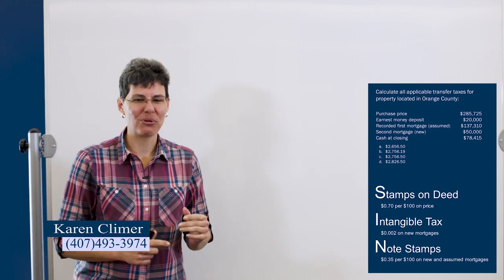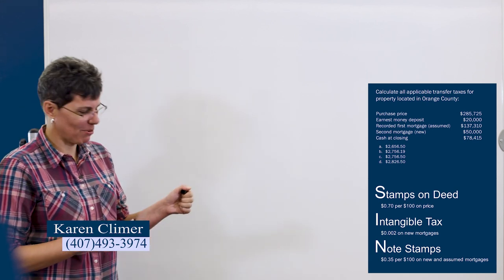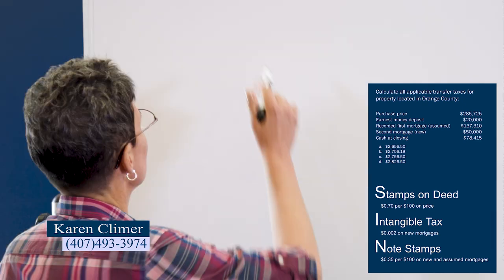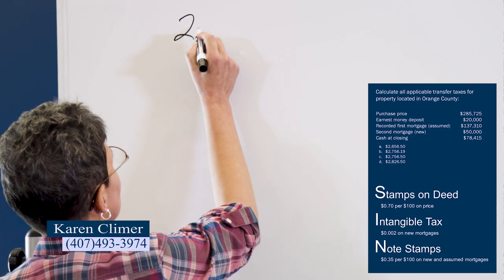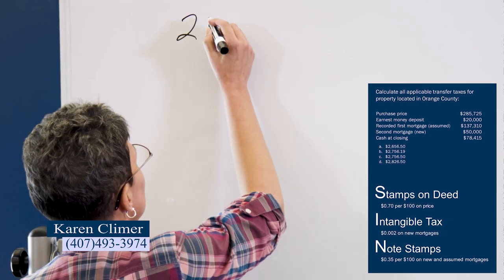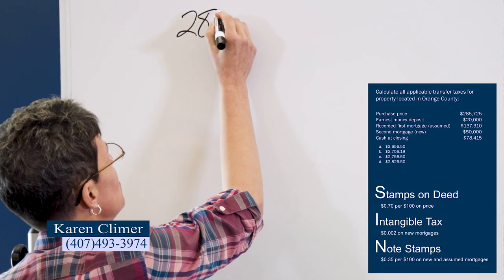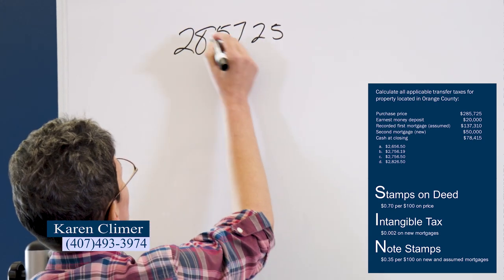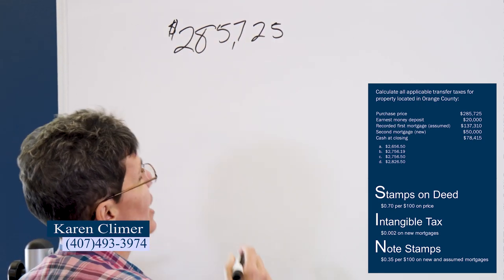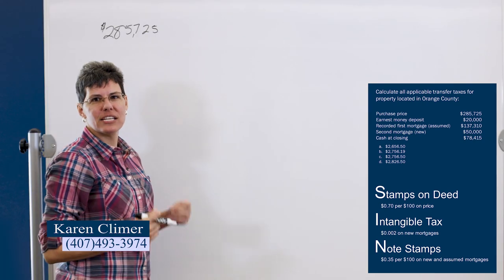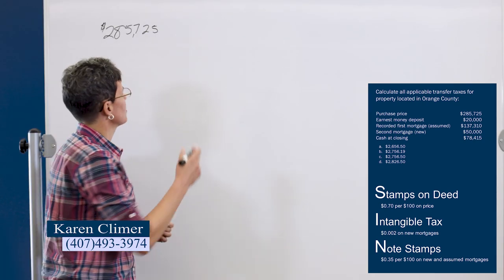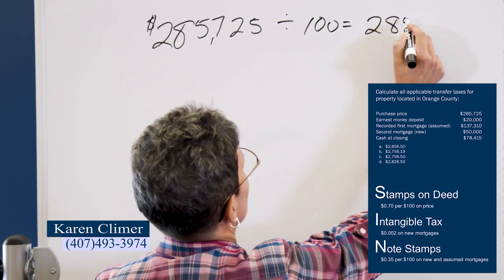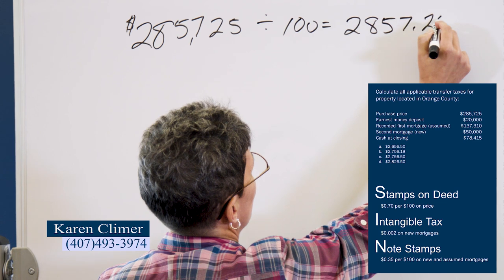So we're going to have several small problems for this one big problem. So we're going to start off with the purchase price, the stamps on the deed. So we've got $285,725 is the price and this is 70 cents per hundred dollars. So we're going to divide by a hundred and that gives you 2857.25.